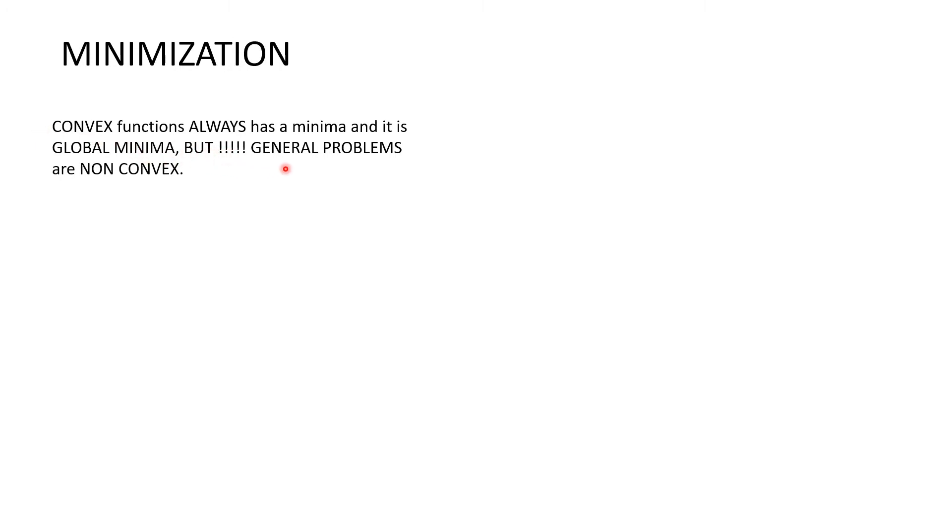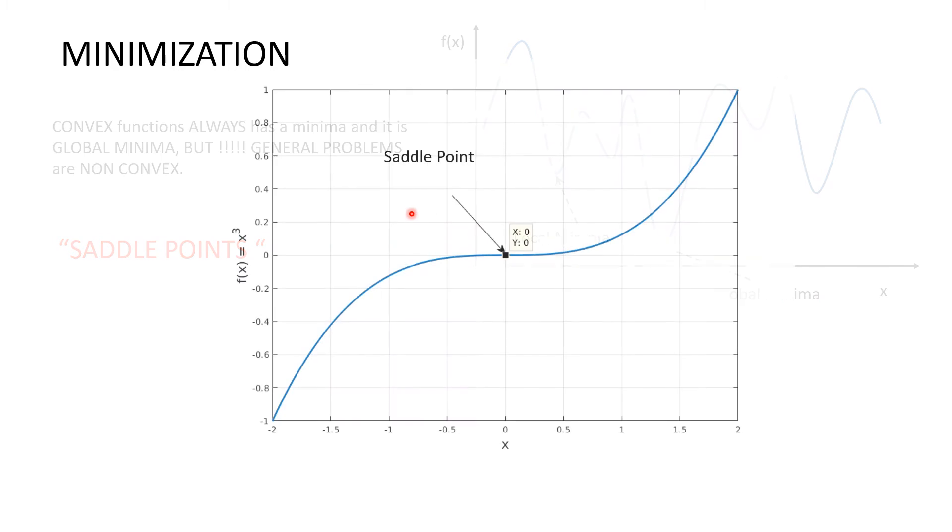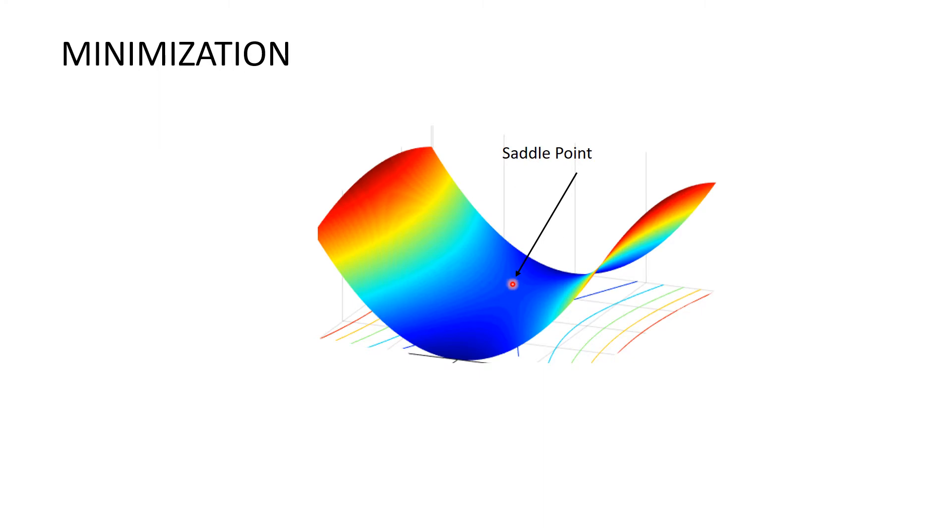But in non-convex function, there are many minima: global minima, local minima and saddle points. Saddle point is a stationary point but not an extremum. So saddle points create problems in minimization.